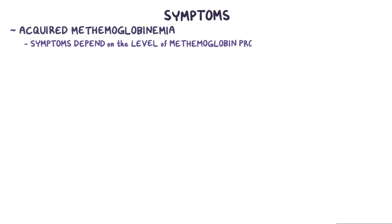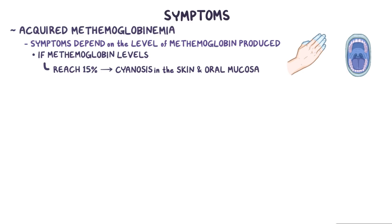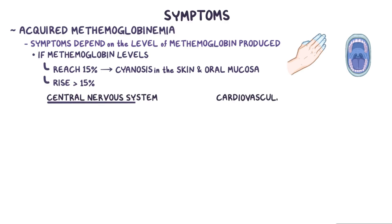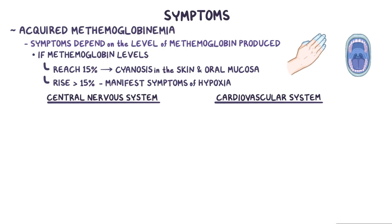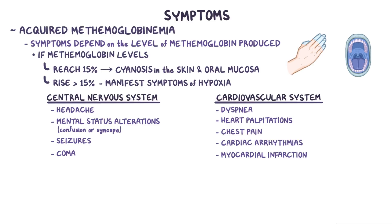Acquired methemoglobinemia presents acutely, and symptoms depend on the level of methemoglobin produced. If methemoglobin levels reach 15%, the first symptom is cyanosis in the skin and oral mucosa. As levels rise above 15%, organs with high oxygen demands, like the central nervous system and the cardiovascular system, start to manifest symptoms of hypoxia. CNS symptoms include headache, mental status alterations like confusion or syncope, seizures, and even coma. Cardiovascular symptoms include dyspnea, heart palpitations, chest pain, cardiac arrhythmias, and myocardial infarction.